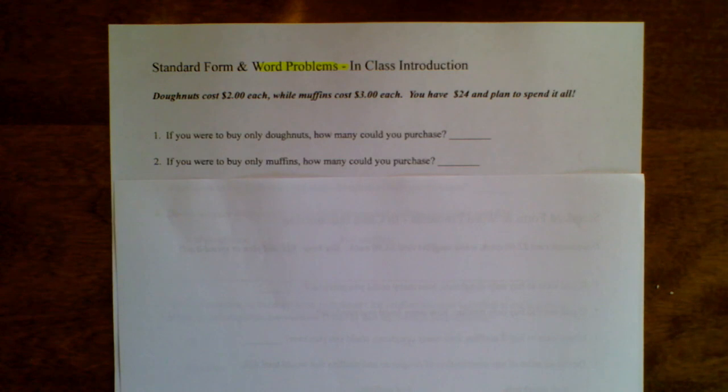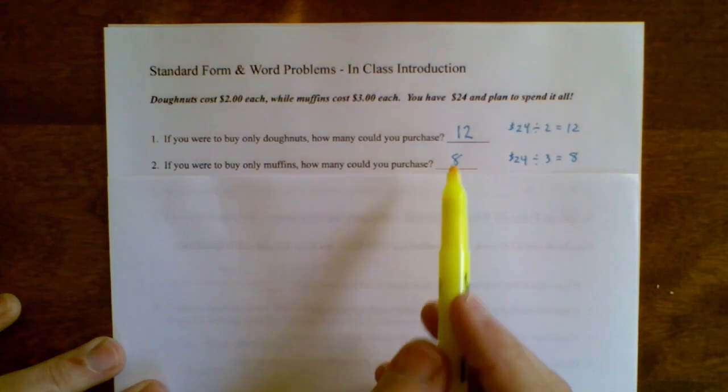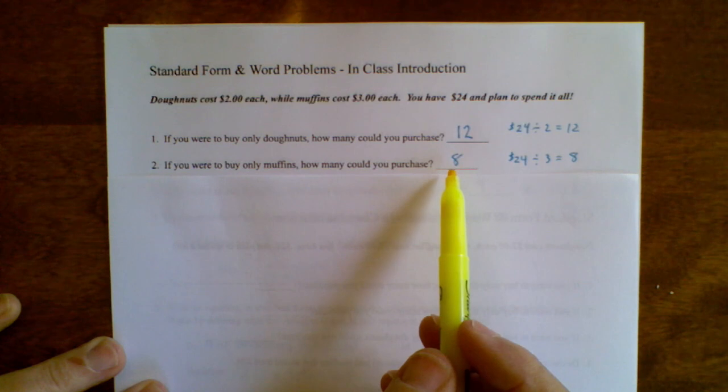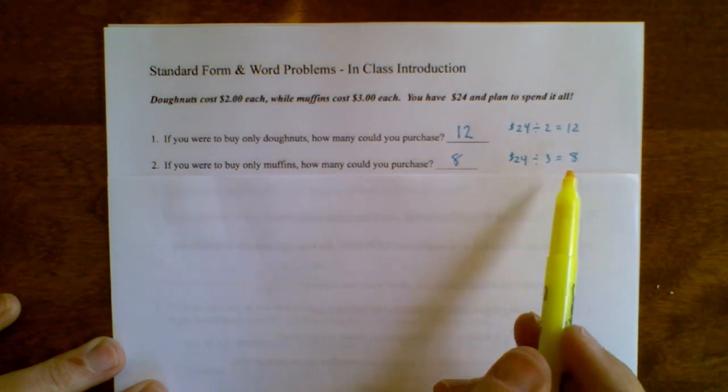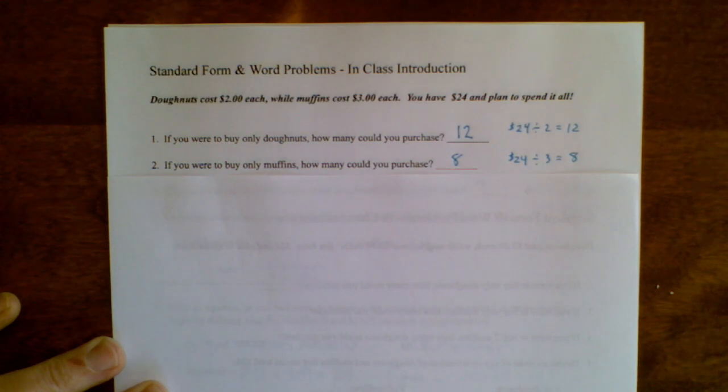Before we get into the equations, let's just do a little bit of mental math. Pause the video and answer both of these questions. Okay, if you were going to buy only donuts or only muffins, that's the amount of each of those that you could buy. That's just simple arithmetic, $24 divided by $2 each or $24 divided by $3 each.